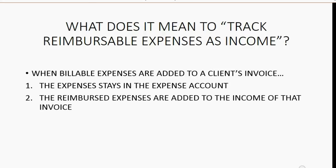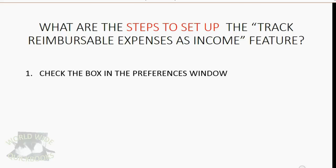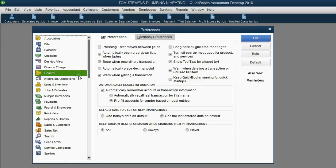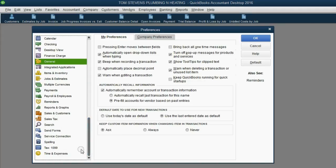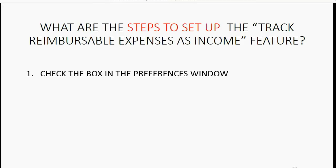It means when billable expenses are added to a client's invoice, the expense stays in the expense account and the reimbursed expenses are added to the income of that invoice. This is different behavior than in the previous video. To set up this feature, first check the box in the preferences window. From the main menu, click Edit > Preferences, scroll to Time and Expense, click the Company Preference tab, and click 'Track reimbursed expenses as income.' Click OK — step 1 is finished.